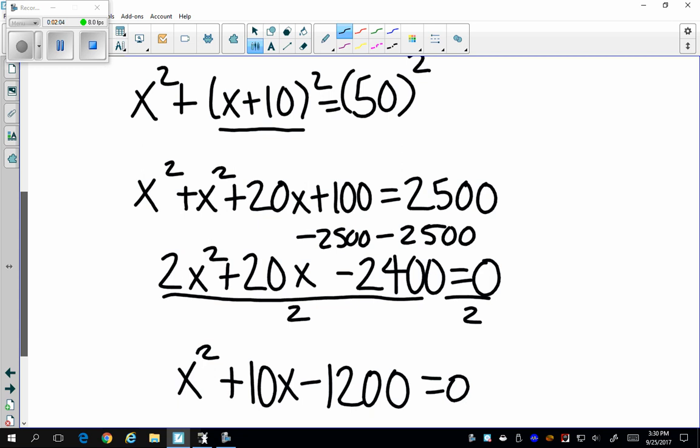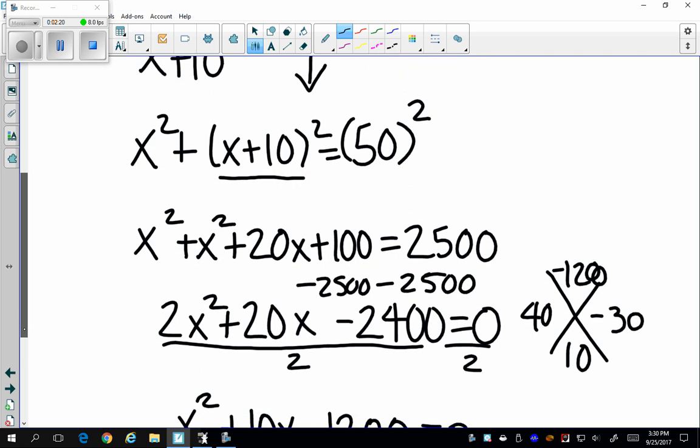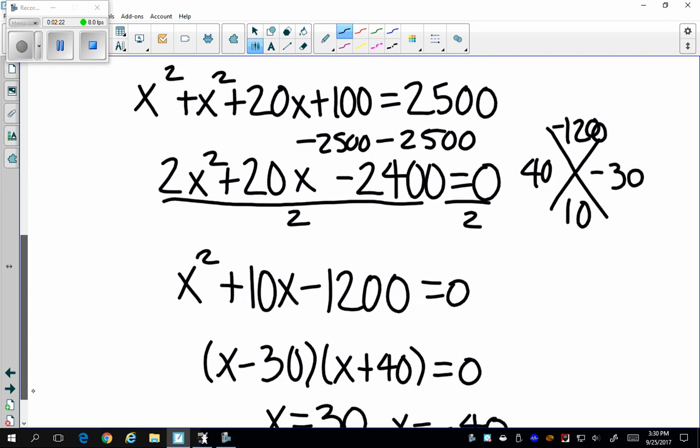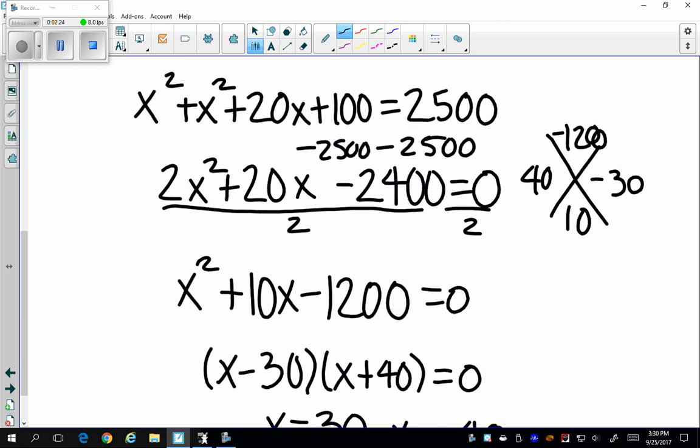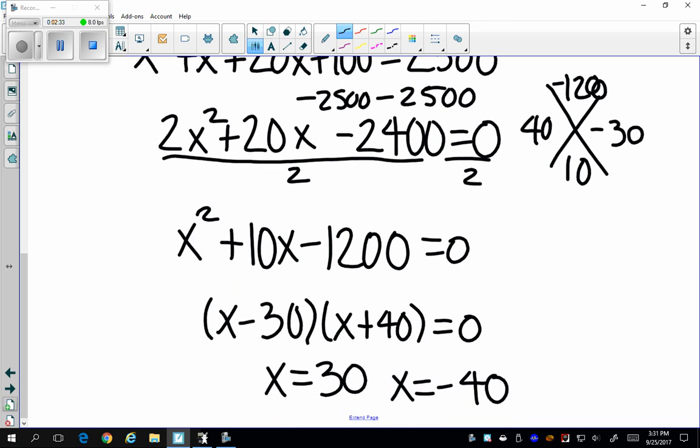I want two things that multiply to negative 1200 but add to 10. And I get those two things to be 40 and negative 30. So those are going to be my factors. So I'm going to plug those in. x minus 30 times x plus 40 equals zero. And then I'm going to solve. I'm going to set each one equal to zero. I get x equals 30 and x equals negative 40.